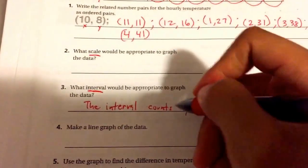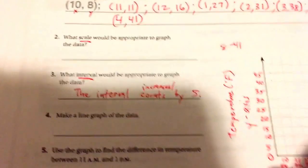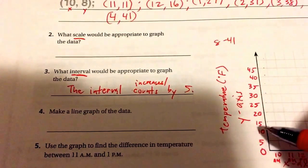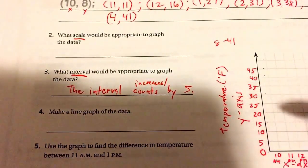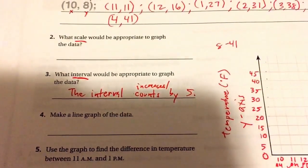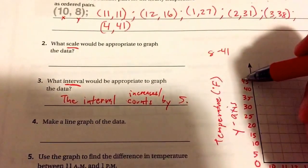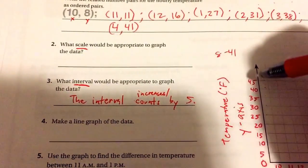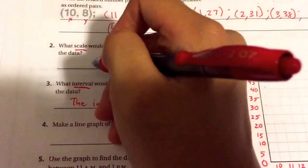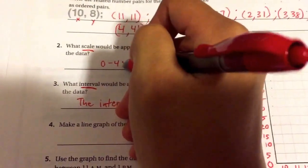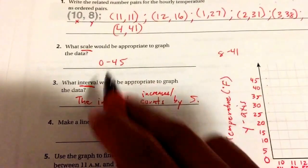Counts by 5 or interval increases by 5. If you did 4, 8, 12, 16, 20, 24, 28, 32, 36, 40, just make sure that this says 4 instead. My scale is from 0 to 45, and for yours, yours might go from 0 to 40 or 0 to 44, but my scale goes from 0 to 45. So you're going to put your lowest number and your highest number for the scale.